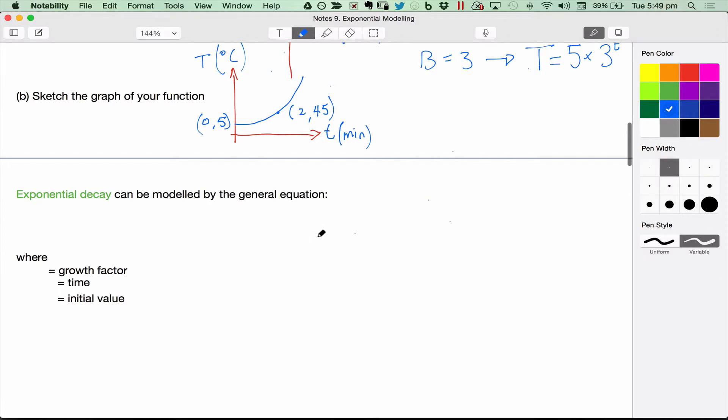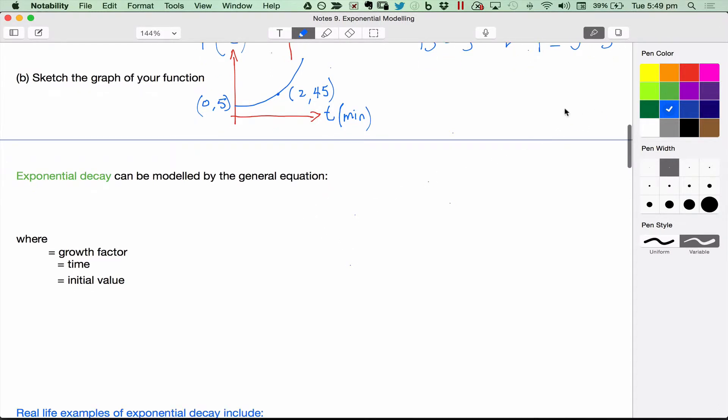Exponential decay, remember, is the one that goes downwards, like this. So something getting smaller over time. So we can use a similar equation.